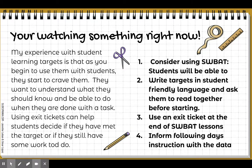Consider using SWABOT as you're thinking about learning targets. SWABOT is: Students Will Be Able To. So what is my SWABOT today? Write targets in student-friendly language and ask them to read together before starting. It might sound like: today we're going to start a science lab and I'd like to think about SWABOT — and kids say SWABOT, students will be able to — and then they talk about what it is they're going to be able to do. Having them repeat and really understand what the SWABOT is is the first step to releasing them.